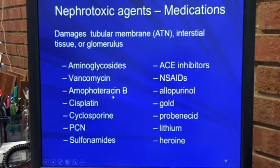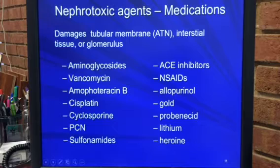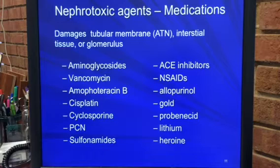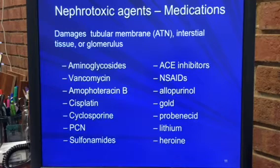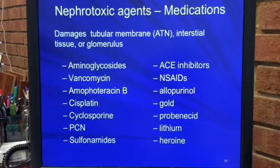Amphotericin B is an antifungal, usually given with a pump, and may require some pre-medication and monitoring during administration. Cisplatin is a chemotherapy medication — an alkylator-like agent used for bladder, prostate, and ovarian cancers. It's also ototoxic, which is interesting because many things that are nephrotoxic are also ototoxic. That has something to do with embryology and the way these tissues were first formed — ears and kidneys are similar tissues.